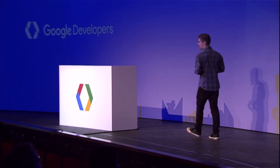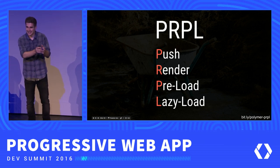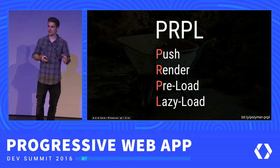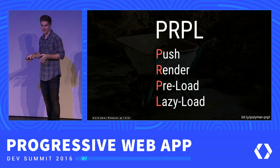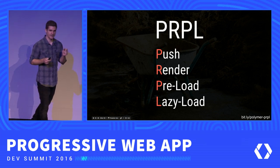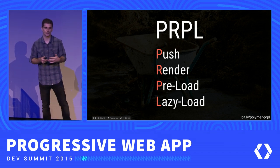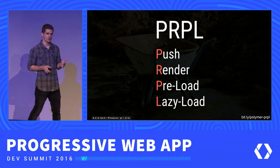Since browsers now have good support for push, the Polymer team came up with a pattern called PRPL — an acronym that guides you towards being interactive as soon as possible. The first step is pushing the resources needed for first render — or using inlining when you can't use HTTP/2 — so content gets on screen as fast as possible with the first request. The next step is pre-loading things the user is very likely to do next. For example, if it's likely the user will open the sidebar, load its JavaScript and styles ready in advance. Everything else should be lazy-loaded on demand.